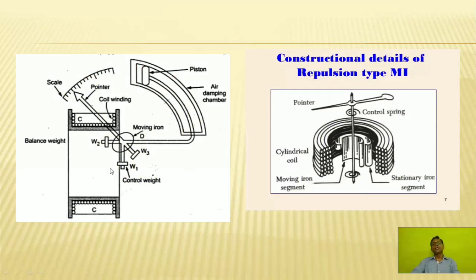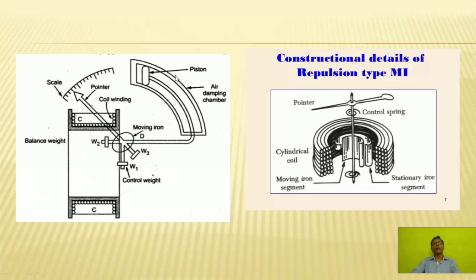Here, the internal construction of an MI type instrument is shown. This is the cylindrical coil, the control spring, and the moving iron shown inside, with the stationary iron segment outside. The pointer is also shown. In the detailed diagram, the scale, coil winding, pointer, and moving iron (W1, W2, W3) are indicated. There is a balance weight and controlled weight. This is the air chamber — a piston moves forward and reverse, and the air resistance to this piston creates the damping torque.